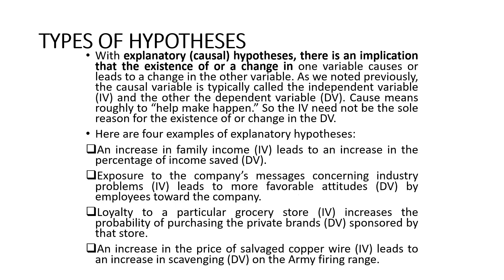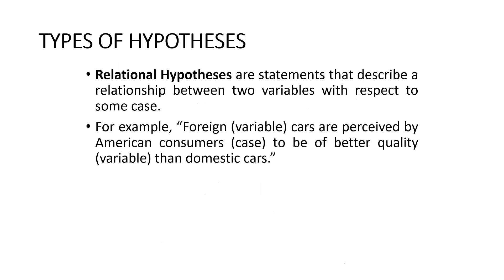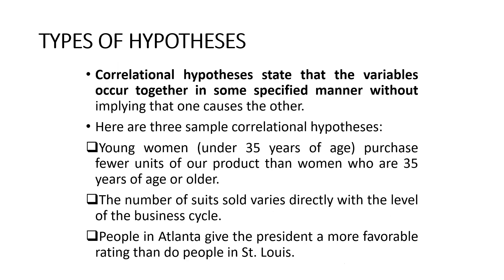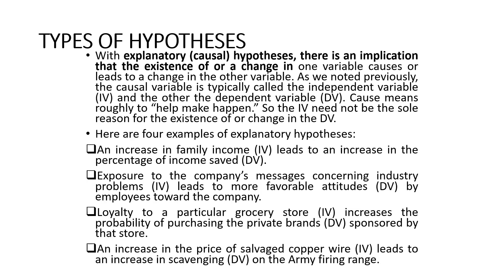When we talk about cause and effect, it is called explanatory or causal hypothesis. There is an implication that the existence or change in one variable causes or leads to change in the other variable — involving dependent and independent variables. For example, an increase in family income leads to an increase in the percentage of income saved. Income is the independent variable and the percentage of income saved is the dependent variable.